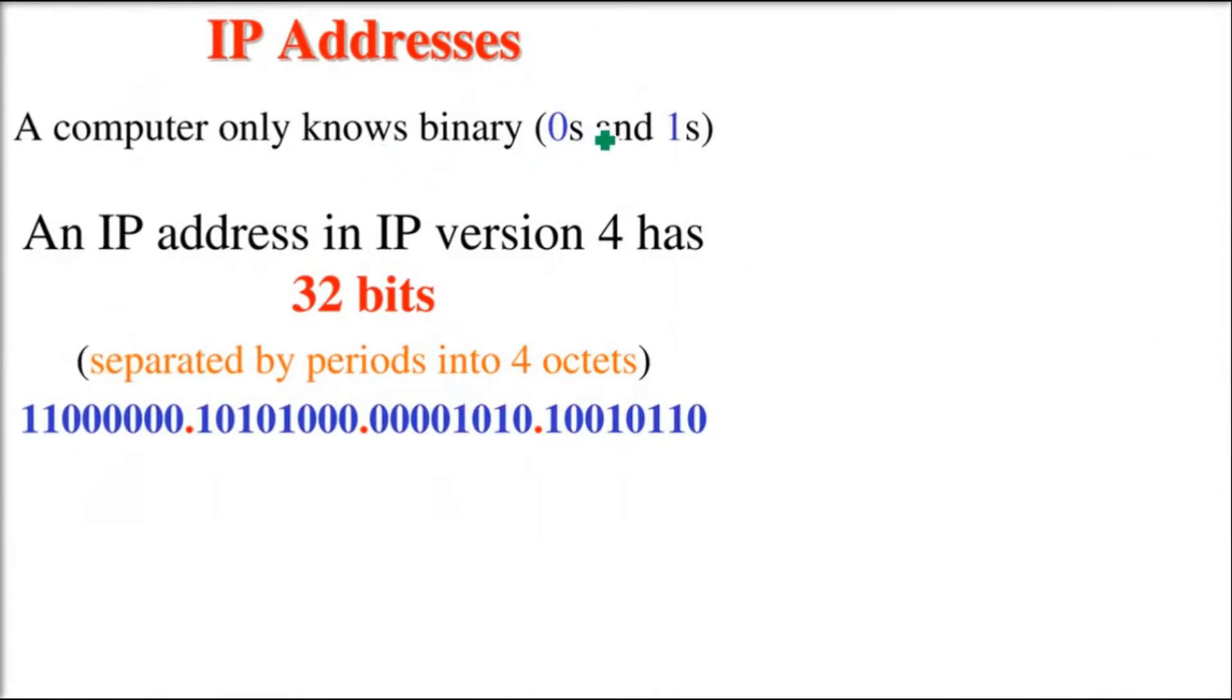A computer or digital device only knows 0 and 1. An IP address in IP version 4 has 32 bits.